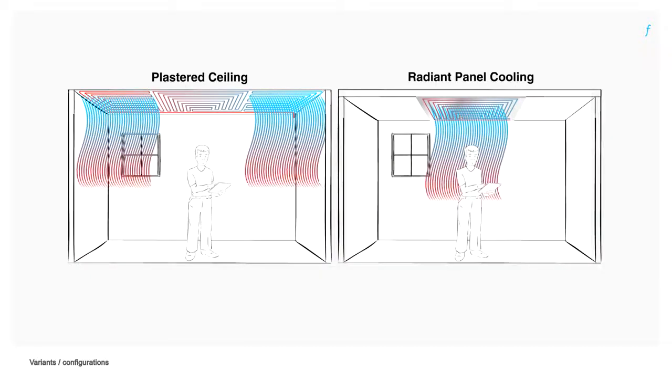Radiant ceiling cooling: Install directly below a structural ceiling, panels with embedded pipes or pipes attached to the ceiling and covered with plaster.